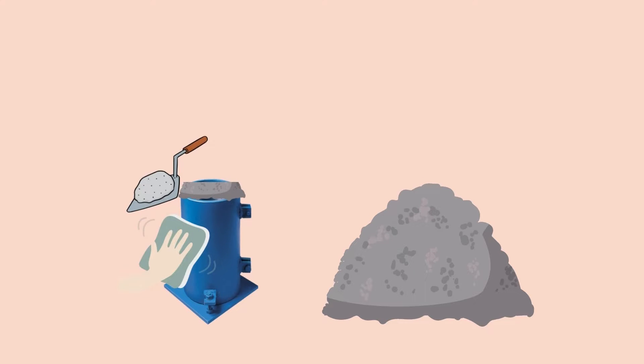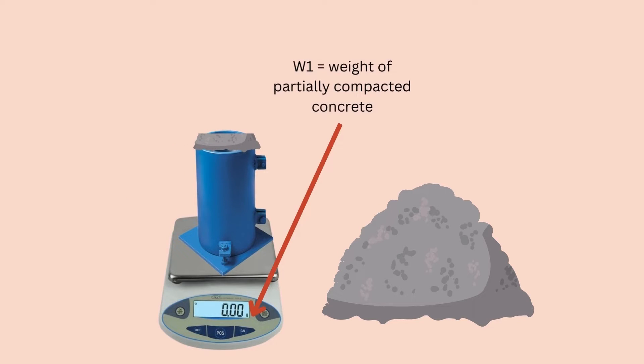Gently clean the external surface of the cylinder. Now weigh the cylinder to the nearest 10 grams with concrete in it. This weight will be considered as weight of partially compacted concrete W1.